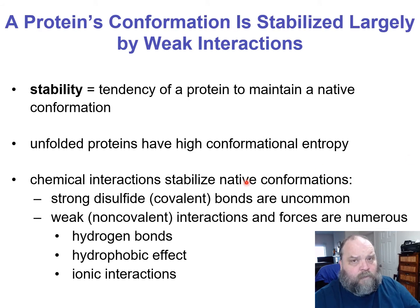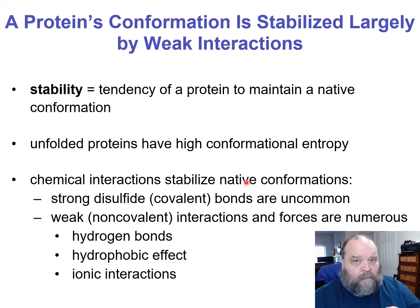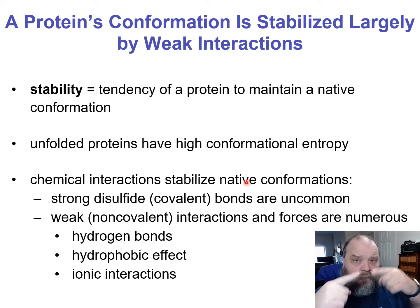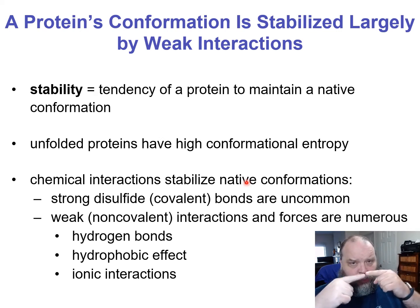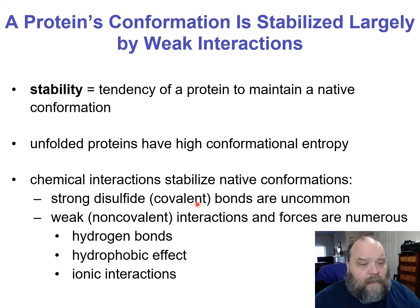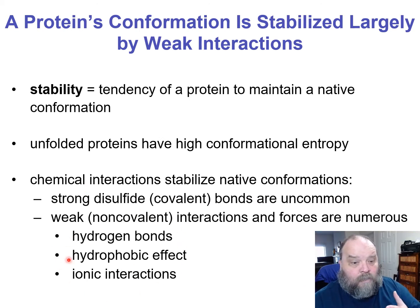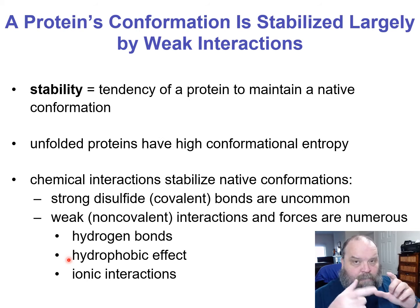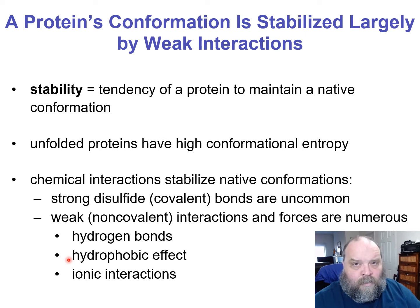It's really important to get to this native conformation because of the stability. The amino acids have to be in the correct orientation and within the correct relative distances, so that hydrogen bonds, hydrophobic interactions, and ionic interactions can take over and help the folding of what we call the secondary level of structure.